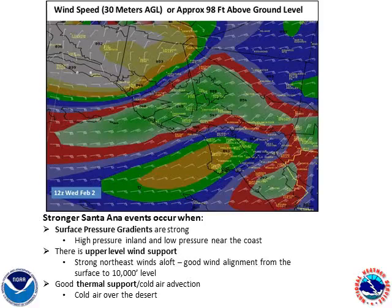This image shows winds and wind speed at 30 meters above ground level, approximately 98 feet above ground level, from the NAM-12 model. This is a field that we often use to judge the strength of future Santa Anas when we're sitting at the forecast desk. And when we're diagnosing just how strong the winds will be, there are three key factors we like to look at.